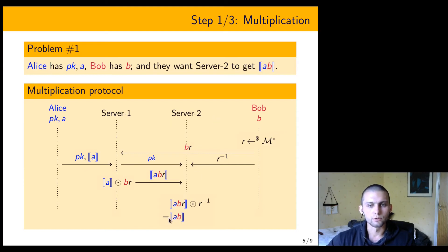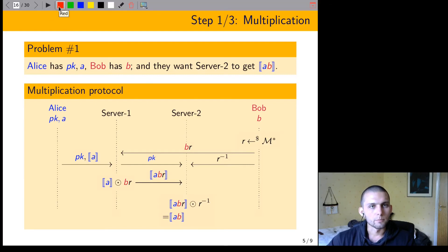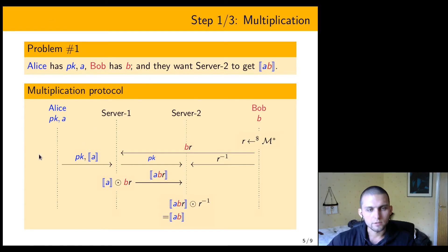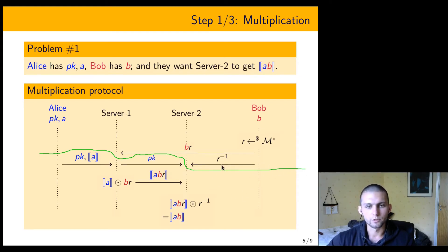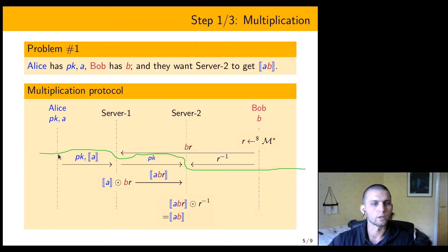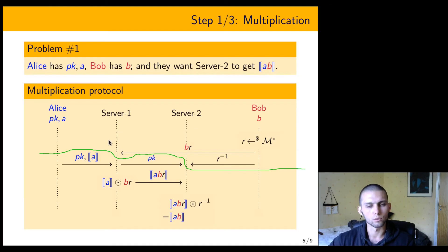Another nice property of this sub-protocol is that you can split it so that all messages above a green line go before all messages below it — meaning Bob's two messages constitute Bob submitting his data to the servers. At this green line, Bob goes offline and Alice comes online only after that. So this small sub-protocol satisfies the property we wanted: all of Bob's messages go before all of Alice's messages, so there is no direct interaction between Bob and Alice. All future steps building the final protocol will also satisfy this property.